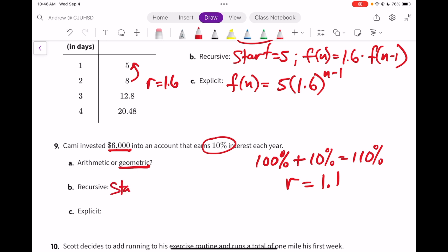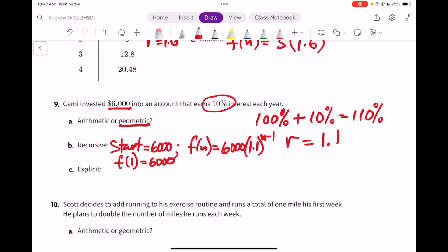So the recursive is to start at $6,000, and then f(1) equals $6,000 if I'm going to do function notation. And then f(n) is the starting point, $6,000, times 1.1 to the n minus 1. Explicitly, oh that is the explicit. The recursive was f(n) equals 1.1 times f(n minus 1).